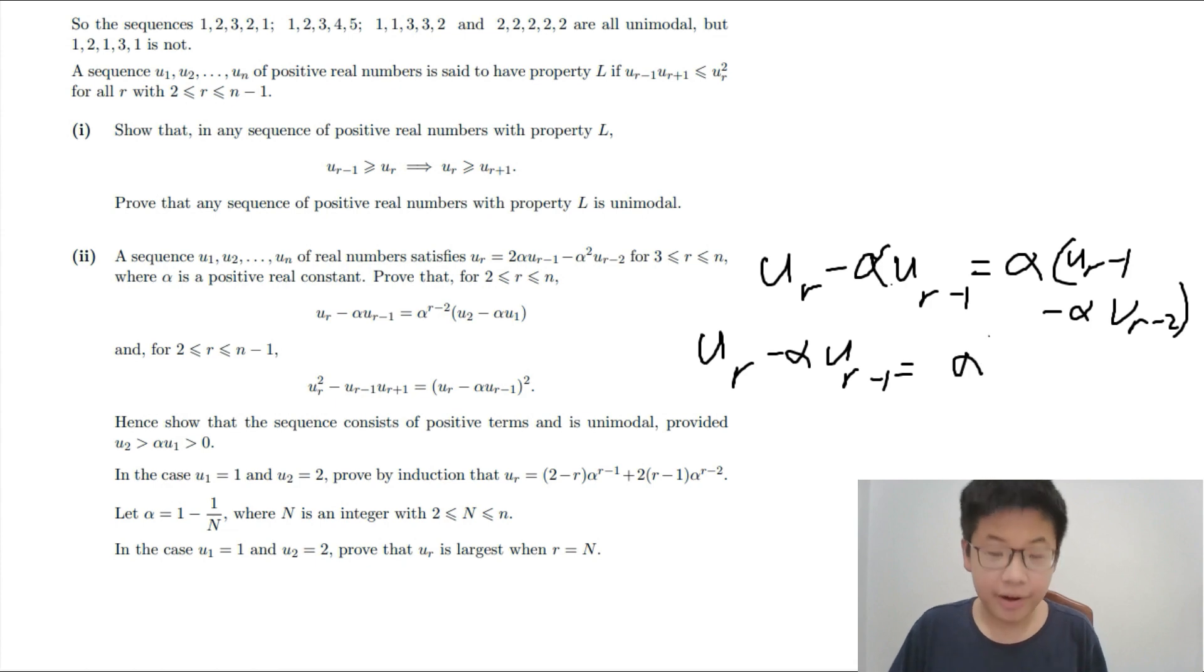And then, you will have alpha to the R minus 2, U2 minus alpha U1 by the recursion method. Because basically, you have something which goes from R to R minus 1. You can go all the way down.